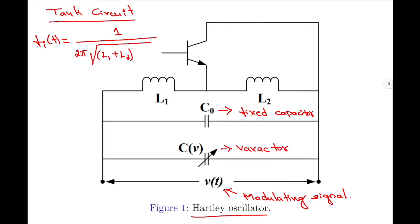If you look at the varactor, the value of the capacitance across it changes as per the input modulating signal V(t). Since the input modulating signal is a function of time, when I write the value of capacitance in the equation for F_i(t), I write it as C(t). The overall capacitance C(t) is a function of time. If asked to write what C(t) is: C(t) = C₀ + C(V(t)), where C₀ is the fixed capacitance and C(V(t)) is the variable capacitance across the varactor. So the inductors L1 and L2, the fixed capacitor C₀, and the varactor form the frequency determining network.